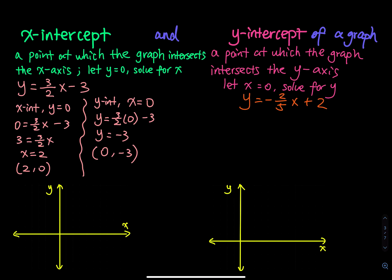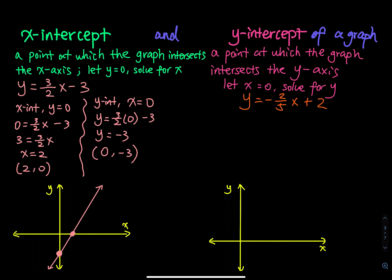To sketch the graph, we plot the two intercept points: (0, negative 3) for the y-intercept and (2, 0) for the x-intercept. Since y = (3/2)x minus 3 is linear, we connect these two points and extend the line. This is the graph of the equation.